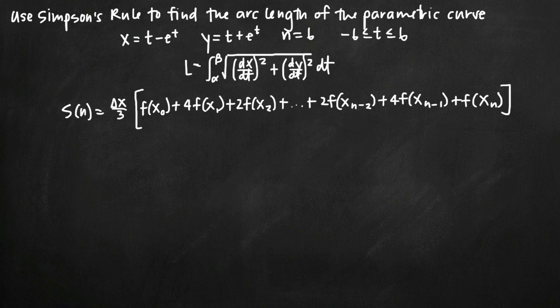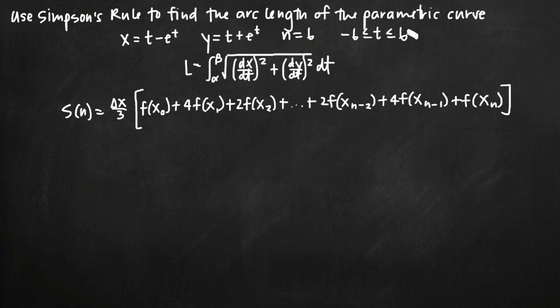Today we're going to be talking about how to use Simpson's rule to find arc length of the parametric curve. In this particular problem, we've been given the parametric curve defined by x equals t minus e to the t, and y equals t plus e to the t. We've been told to use n equals 6 with Simpson's rule, and the interval is defined by t is greater than or equal to negative 6 and less than or equal to positive 6.